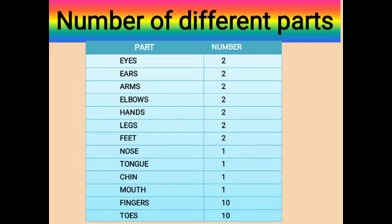Do you know that we have a number of different parts? We have two eyes, two ears, two arms, two elbows, two hands, two legs, two feet, one nose, one tongue, one chin, one mouth, ten fingers, and ten toes. When I say ten fingers, that means including the two thumbs.